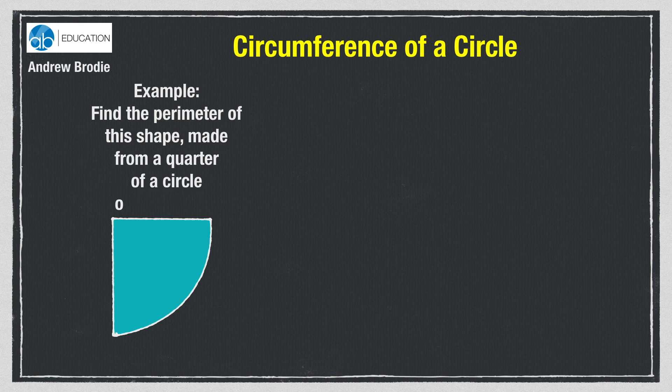Here's the final example. Notice that the question is asking for the perimeter of the shape. We use the word circumference when we're talking about the perimeter of a circle, but this shape is not a circle. You can see that we're going to need to find the length of the curved part of the shape, which is a quarter of a circle, but we're also going to need to add on the two straight sides to find the total perimeter.